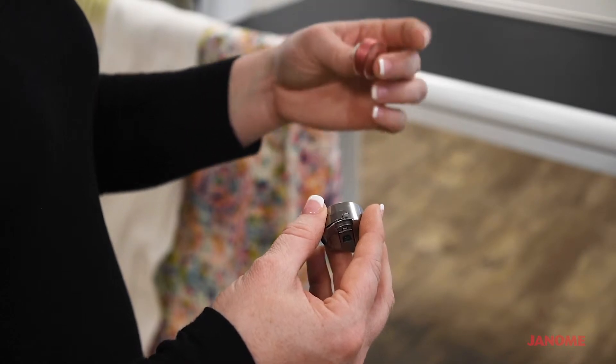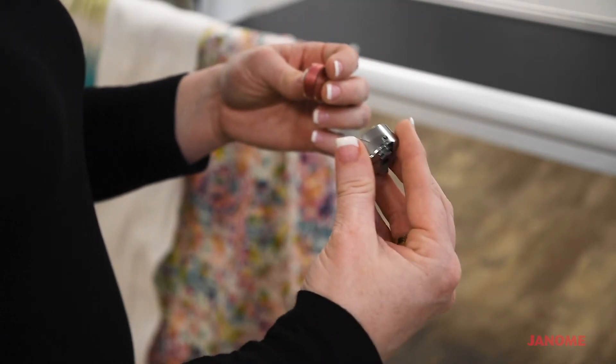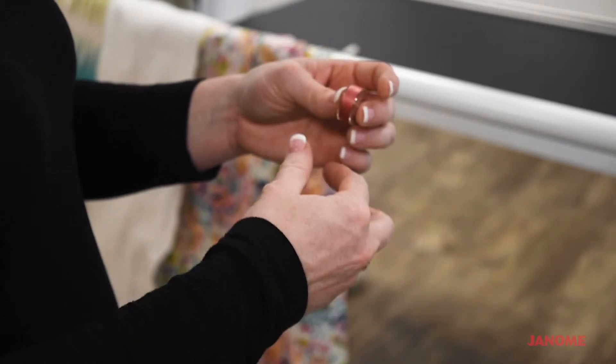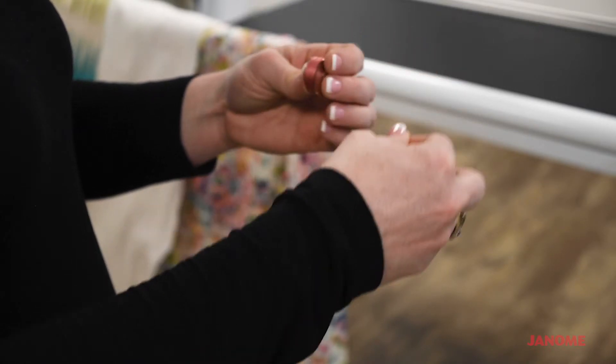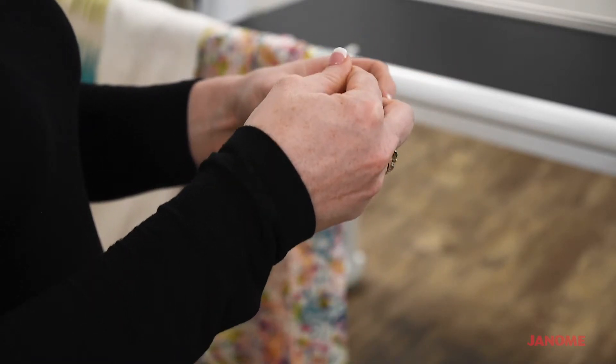When threading your bobbin, hold your bobbin in your left hand and your bobbin case in your right hand. Make sure that your thread is coming over the top of the bobbin when it comes off the bobbin.